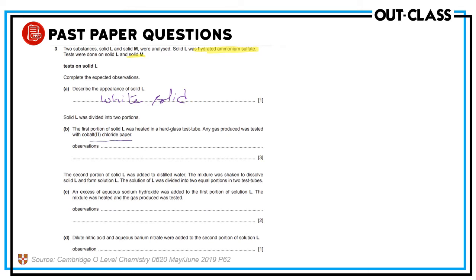Again, cobalt chloride paper is the test for water, and solid L is hydrated, so cobalt chloride paper will turn from blue to pink, as water vapors will be produced. The second portion of solid L was added to distilled water and the mixture was shaken to dissolve.